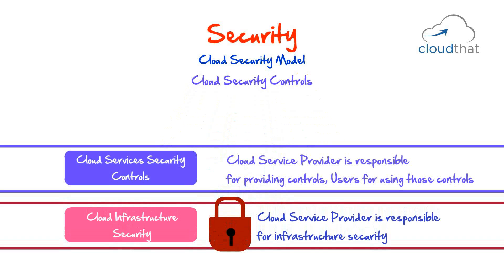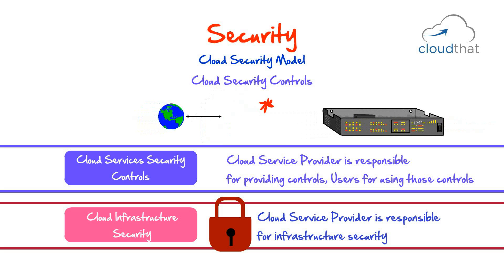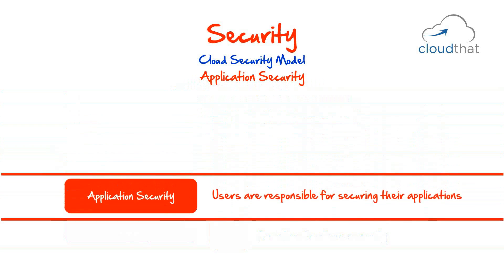Cloud security controls: cloud providers must give you controls to further secure your data and applications. One such control could be a firewall around your instance. It's Amazon's responsibility to make sure the firewall is available and configurable, and your responsibility to keep only the right ports open. For example, a web server should only have port 80 open; opening ports 1 through 65,000 makes your application far less secure.